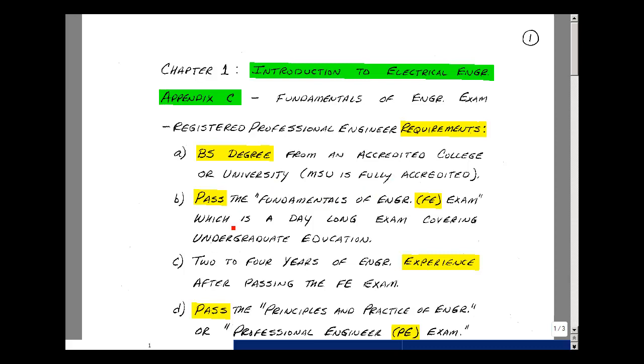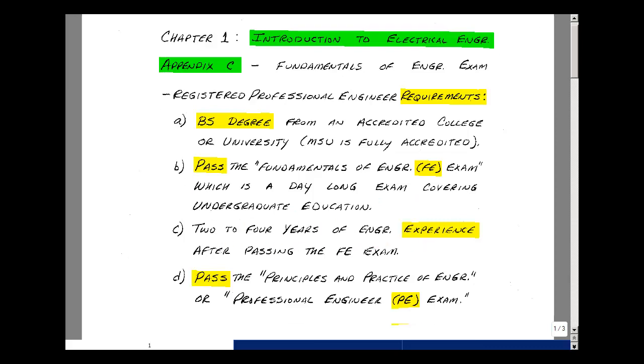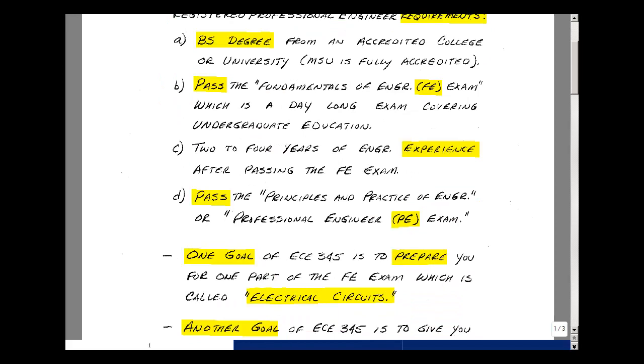Second, you need to pass the Fundamentals of Engineering exam, something just called the FE exam, which is a day-long exam covering undergraduate education. After that, you'll need to get two to four years of engineering experience. After years of experience, you need to take one more exam called the Principles and Practice of Engineering, or just the Professional Engineers exam, or PE exam.